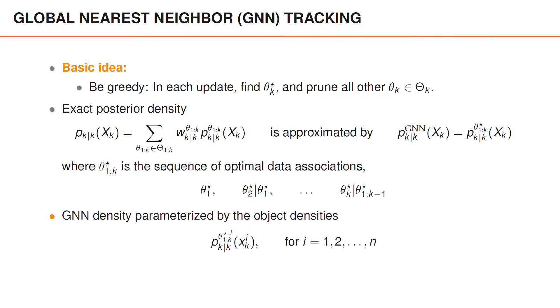The GNN posterior density is parametrized by the object densities computed given the optimal assignments. If the object densities are Gaussian, then the GNN posterior is parametrized by the means and the covariances of the objects.